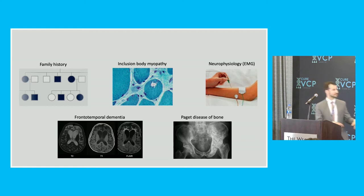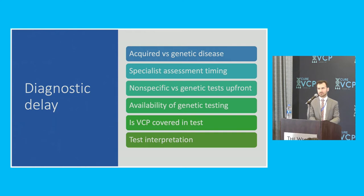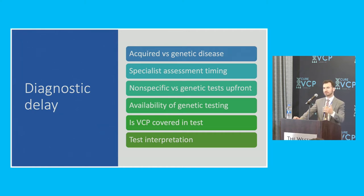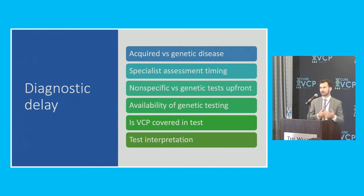The X-ray here is showing Paget disease of bone — a condition where you have some abnormal proliferation of bony tissue that occurs, with this kind of fluffy appearance around the hip. Identifying people who have this condition is one of the great challenges. It's not just challenging because people with diagnoses may be hard to bring into an organization like this, but also because there are many reasons that we have diagnostic delays on the part of healthcare providers in figuring out what the diagnosis is. Delays can hold people back by months, years, or unfortunately in some cases even over a decade.